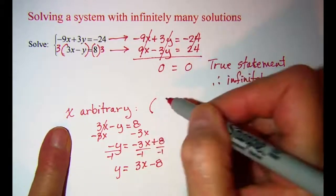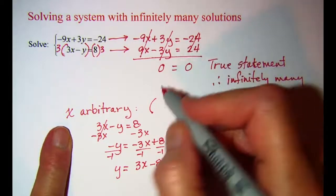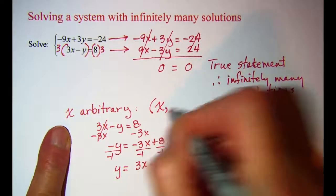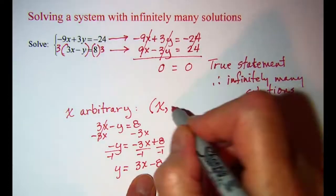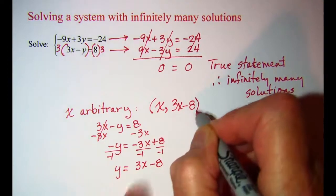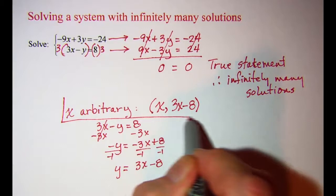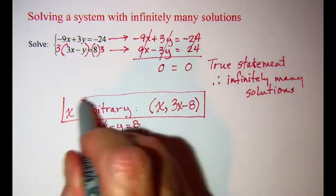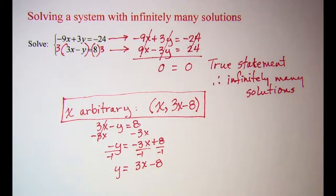So if x is arbitrary, then my point that I would indicate would be x, and then in place of y, I'll write 3x minus 8. So let me box that in. Since I didn't tell you which to write, I'll show you both. And so that's if the x is arbitrary.